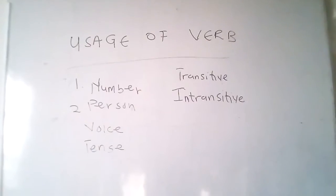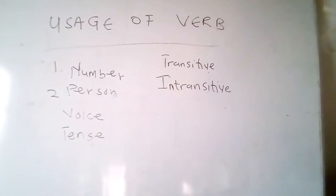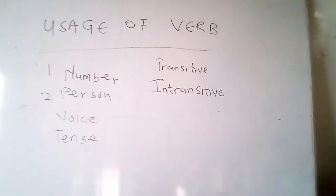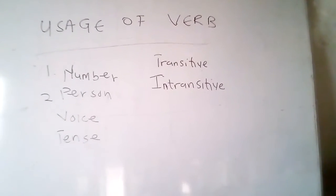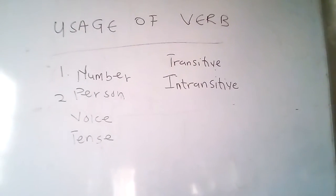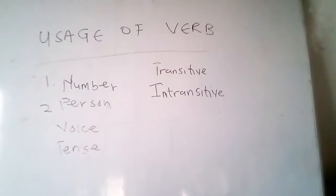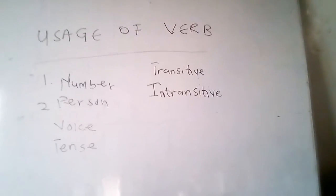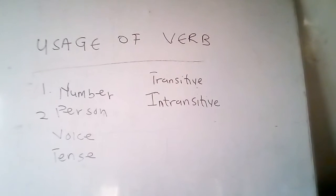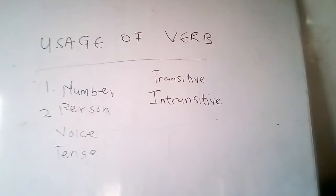Now let's go to the usage of verbs. A verb can be used in various forms depending on the following aspects: number, person, voice, tense, and whether it is transitive or intransitive. Let's discuss them one by one.